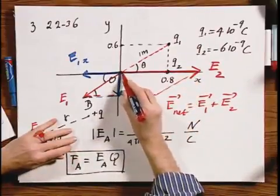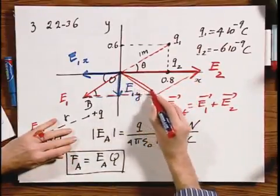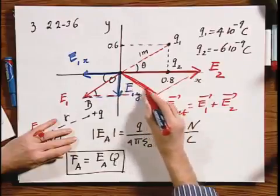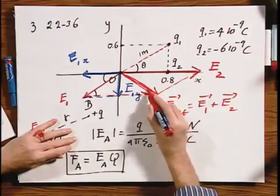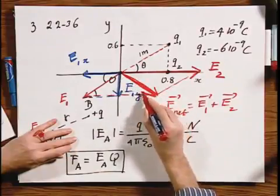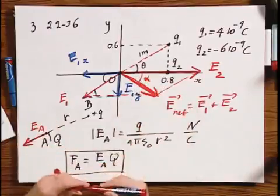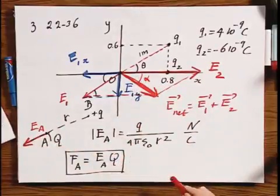Parallelogram. So this is the net electric field. And you should have no problems calculating both the magnitude as well as this angle, let's call it alpha. And I will leave you with that. That should not pose any more problems.